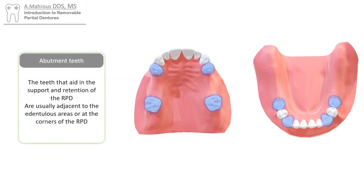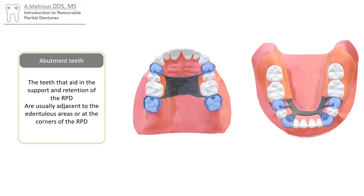The abutment teeth are teeth that aid in the support and retention of the RPD. They are usually adjacent to the dentureless areas or at the corners of the RPD.